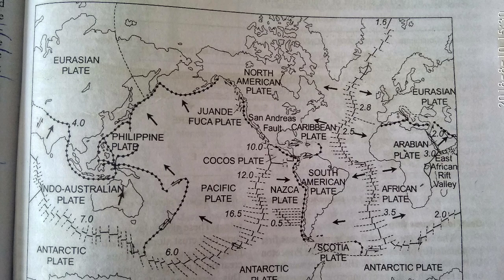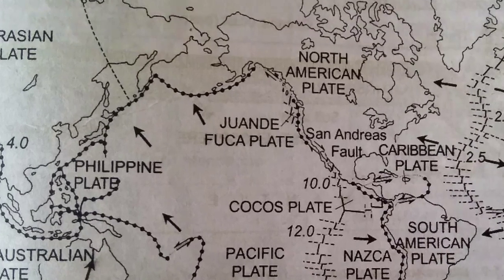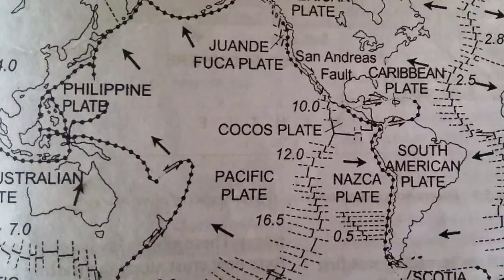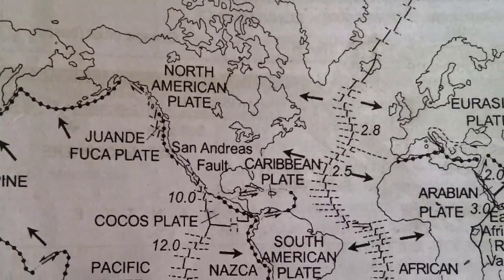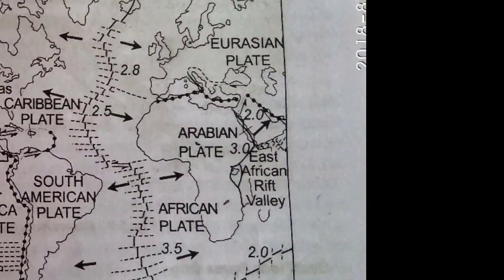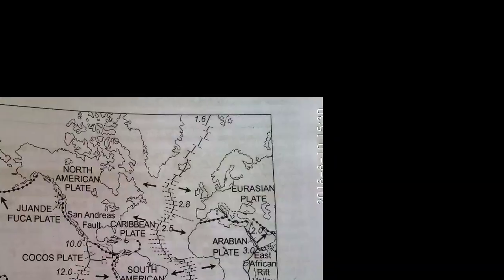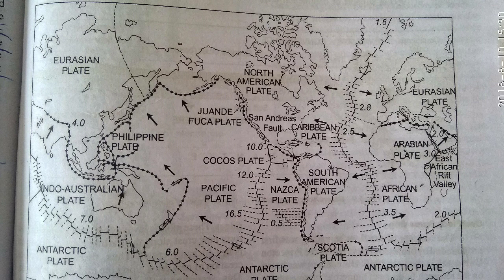Here are some minor plates. This photo is taken from Savindra Singh, the book Savindra Singh. And there are some minor plates like Philippines plate, here Cocos plate, and in the upper side Caribbean plate, here Scotia plate, and Eurasian plate, East African Rift Valley. These are the minor plates, these are the important minor plates. Although there are twenty minor plates, but out of those, these are important.